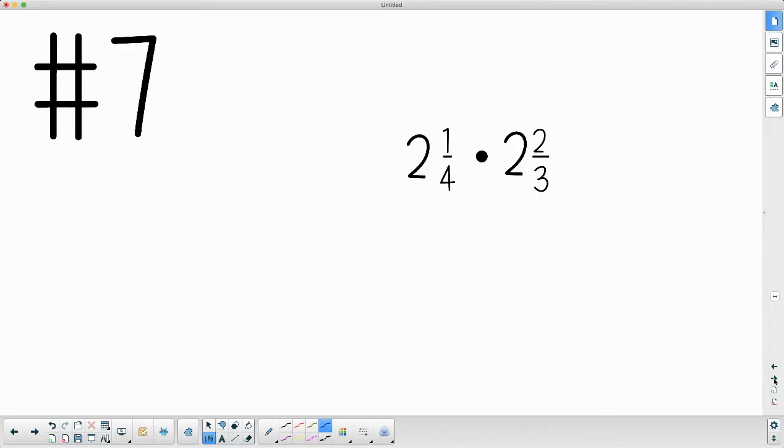Number seven asks us to multiply these. So the first thing that we need to do is we need to make them improper. So to do that, we are going to do 2 times 4 is 8 plus 1 is 9, and then our denominator stays the same, so over 4. And then we're going to multiply 2 times 3 is 6 plus 2 more is 8, and the denominator stays the same.